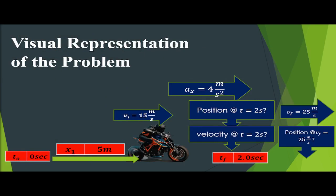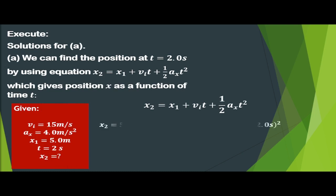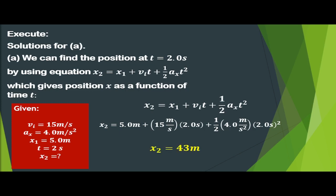Let's solve for part a — the position at time t = 2 seconds. Using equation 8: x₂ = x₁ + v_i×t + (1/2)×a_x×t². Substituting the given values and simplifying, we find x₂ = 43 meters. Next, we find the velocity at t = 2 seconds using equation 6: v_f = v_i + a_x × t. Substituting the given values: v_f = 15 m/s + (4 m/s²)(2 s) = 23 meters per second.